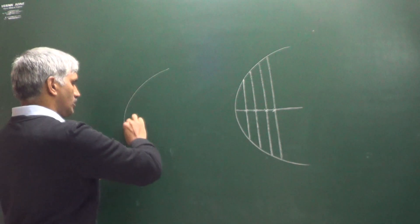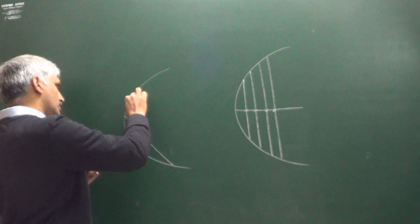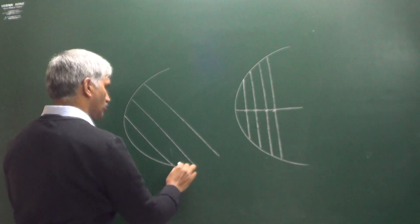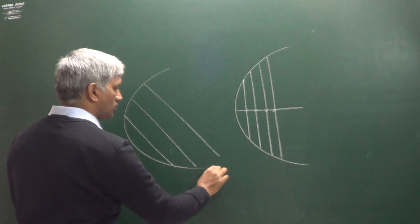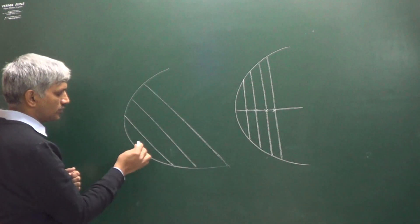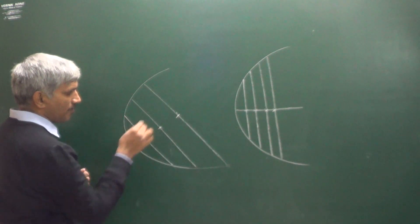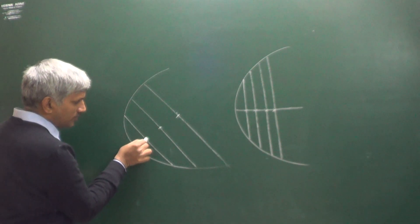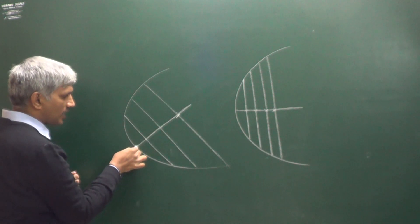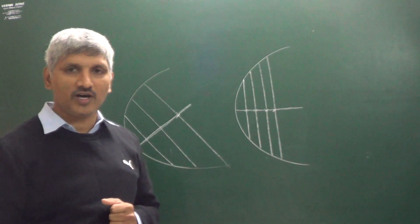Suppose this is a parabola, this is a chord, and this is another chord. All these chords are parallel. The middle point of this chord, the middle point of this chord — all these middle points lie on a straight line. This straight line is called the diameter of a parabola.